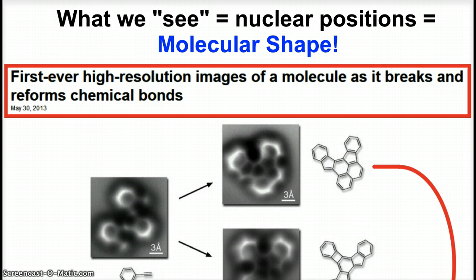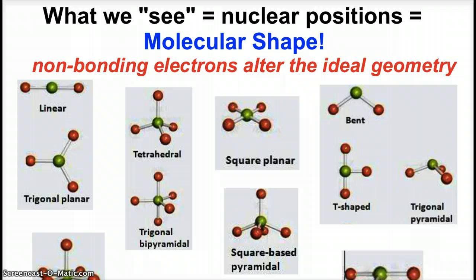Our VSEPR shape predictions are being experimentally proven. We see nuclear positions, which is the molecular shape. The electron geometry and the shape will be the same if we have all bonds around the central atom—those are our ideal geometries. For example, when there's four atoms around the central atom, that's tetrahedral.